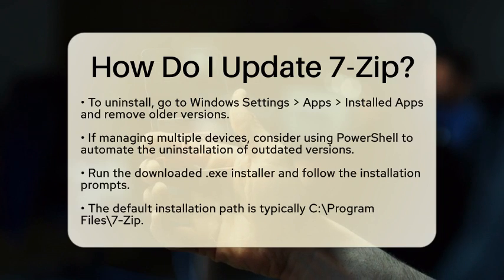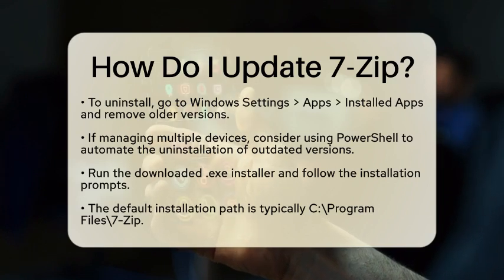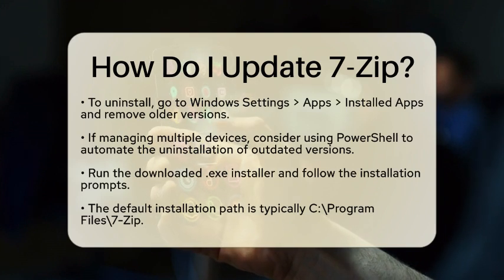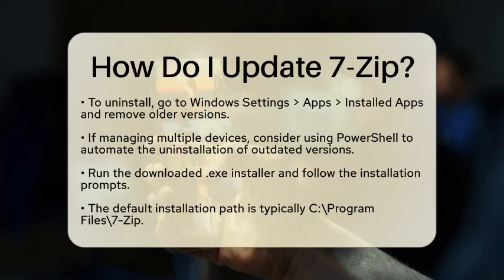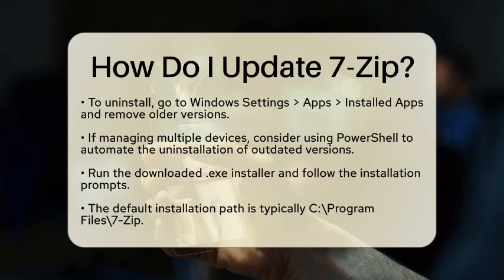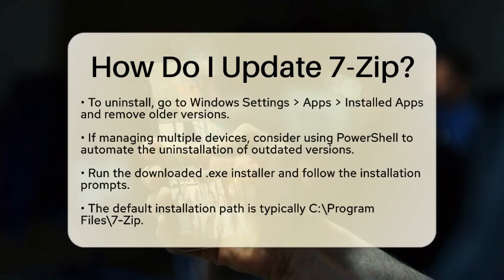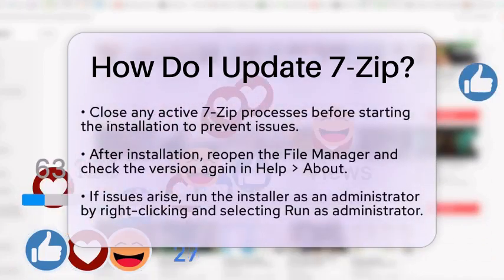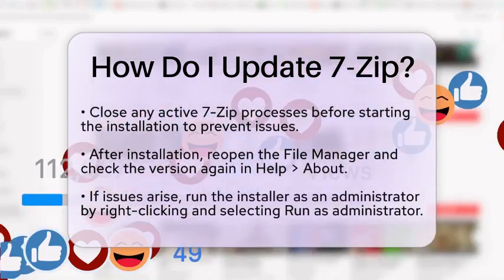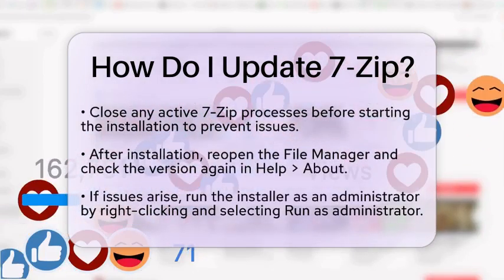Now, let's install the new version. Run the downloaded installer and follow the prompts. The default installation path is usually C:\Program Files\7-Zip. Make sure to close any active 7-Zip processes before you start the installation to avoid any issues.